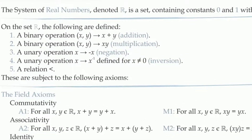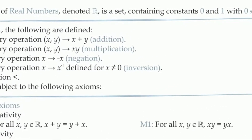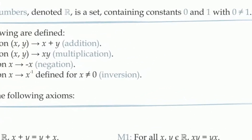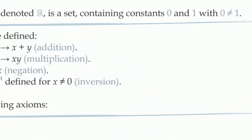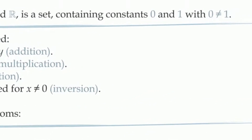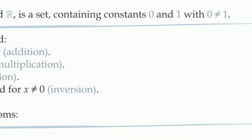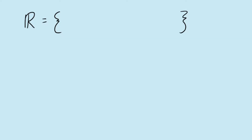You'll notice that there are only two real numbers that are included in the definition, those being 0 and 1. So at this point, we're thinking of the real numbers as being a set that has at least two elements in it — 0, 1 — and possibly more.